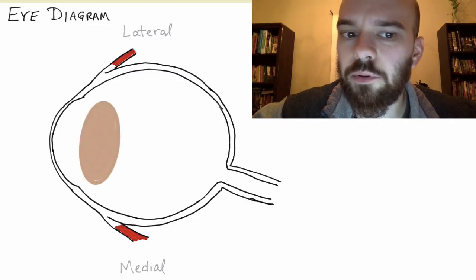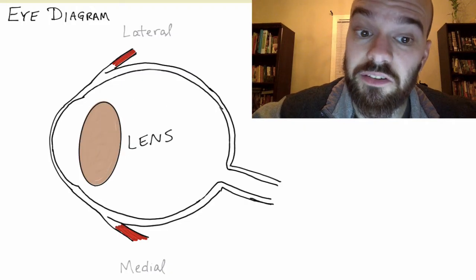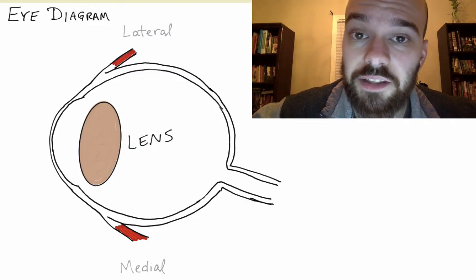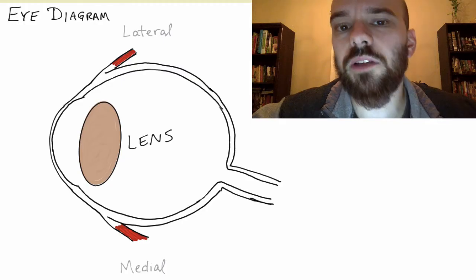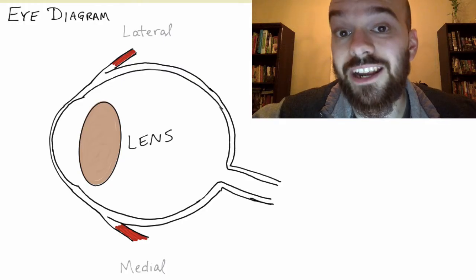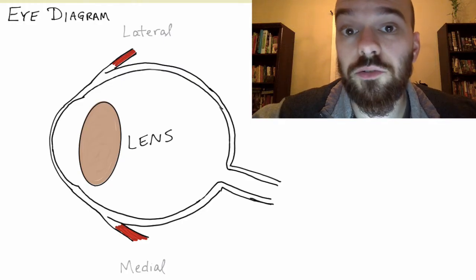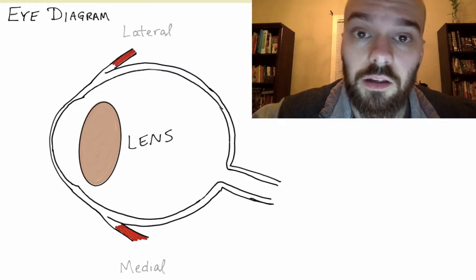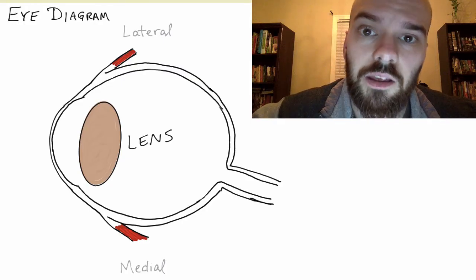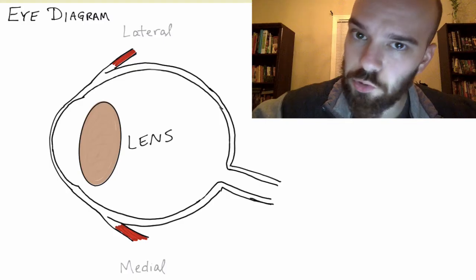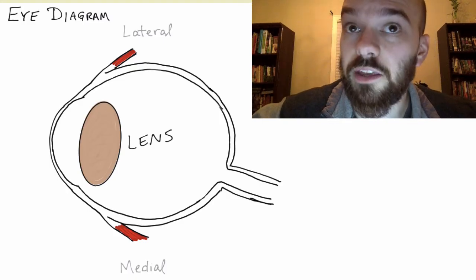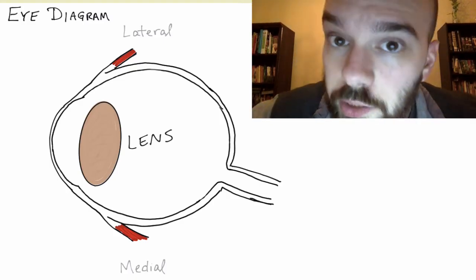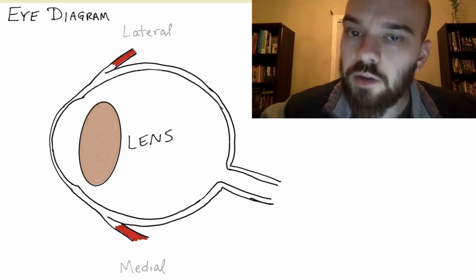Next we're going to label the lens. This is going to help focus light onto the retina of the eye. The lens will actually change shape to help you see things that are far away and things that are really close.